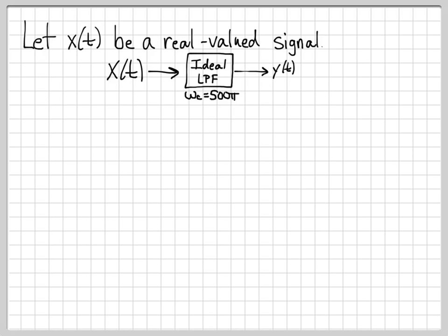And the output of this ideal low-pass filter is the signal y of t. So you can see by allowing just the low-pass frequency components to pass and removing everything above 500 pi radians, y of t is a low-pass signal.